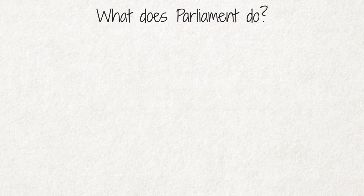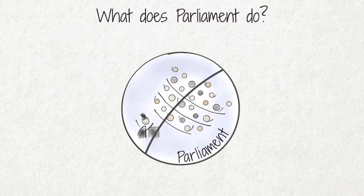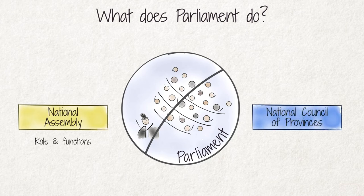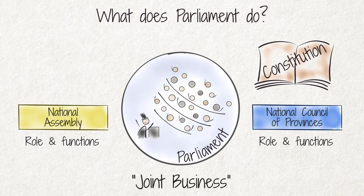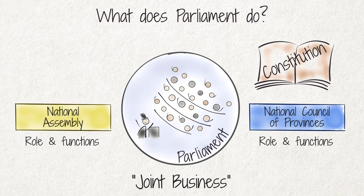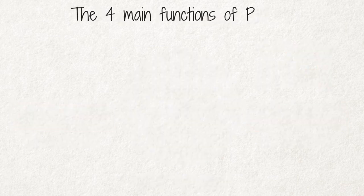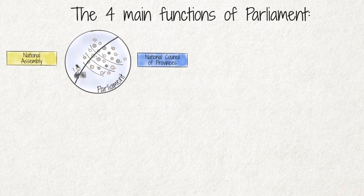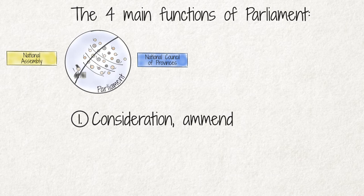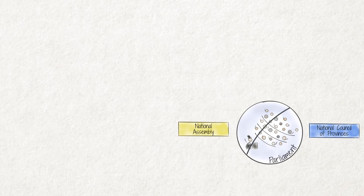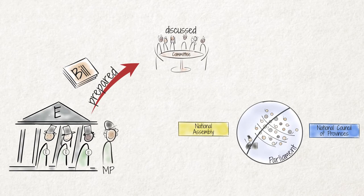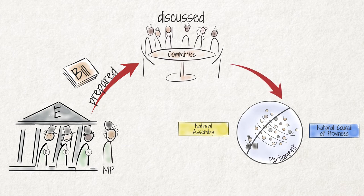Now that we know what parliament is, let's talk about what parliament does. Each house has its own distinct role and functions as set out in the constitution. However, there are also many instances when the two houses act together to conduct joint business. They have four main functions or areas of jurisdiction. The first is the consideration, amendment, and passing of draft laws, called bills. Bills are usually introduced by the executive, but they can also be introduced by MPs and are then discussed in parliamentary committees, which may amend provisions and approve them before both houses of parliament vote on whether to pass them.